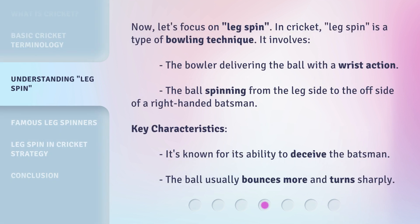Now, let's focus on legspin. In cricket, legspin is a type of bowling technique. It involves the bowler delivering the ball with a wrist action, with the ball spinning from the leg side to the offside of a right-handed batsman. It's known for its ability to deceive the batsman, and the ball usually bounces more and turns sharply.